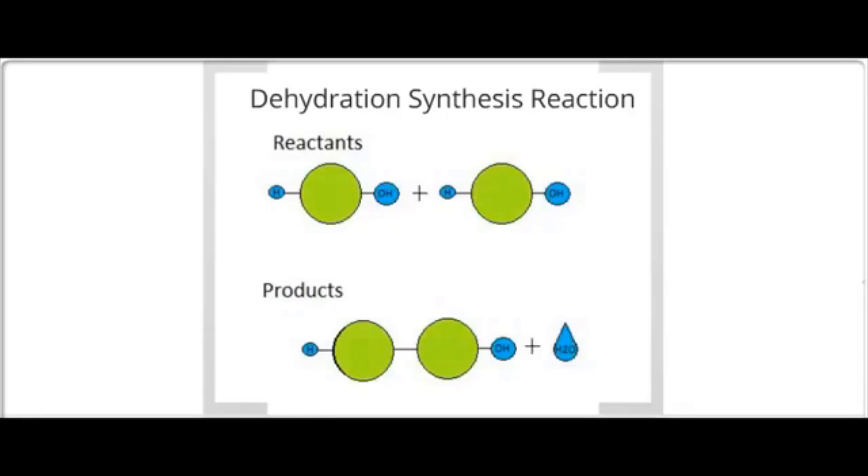During the dehydration synthesis reactions, two monomers are linked together with a covalent bond. And a molecule of water is produced by combining hydrogen and oxygen atoms from the monomers.